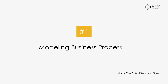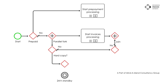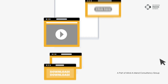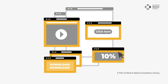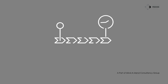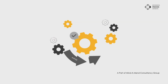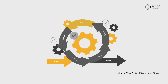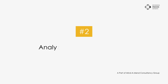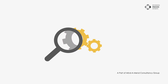SAP Signavio can be used for a variety of purposes. Number one: modeling business processes. SAP Signavio provides a variety of tools for modeling business processes, including drag-and-drop functionality, pre-built templates, and support for different modeling notations. This makes it easy to create accurate and detailed models for your business processes.